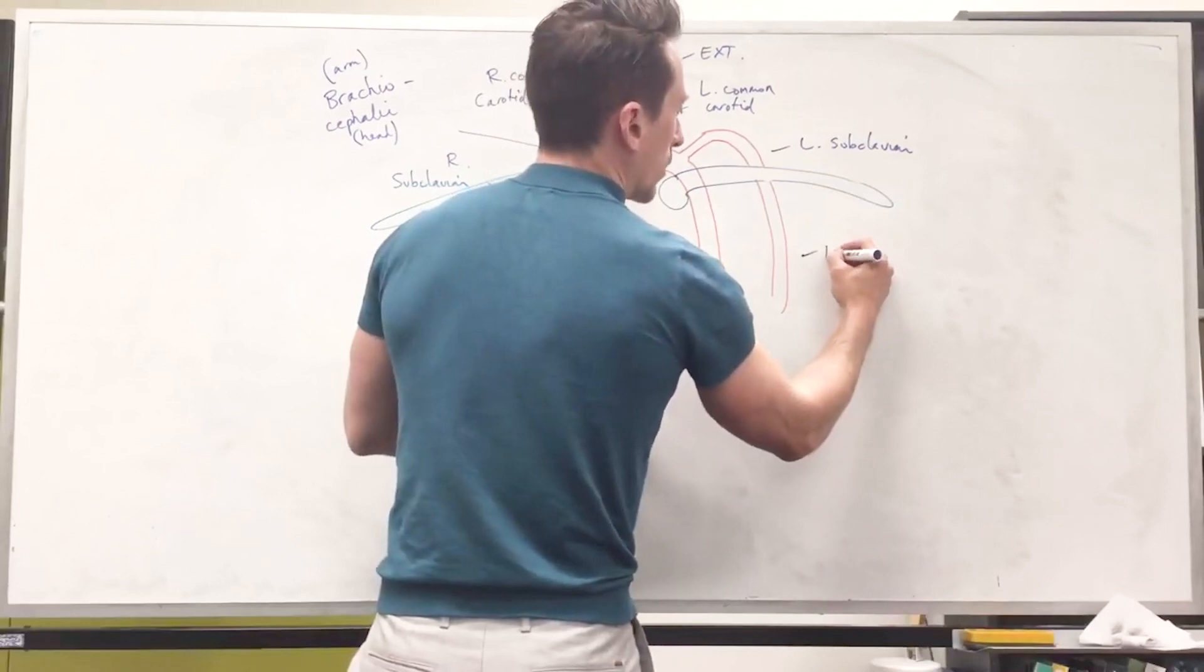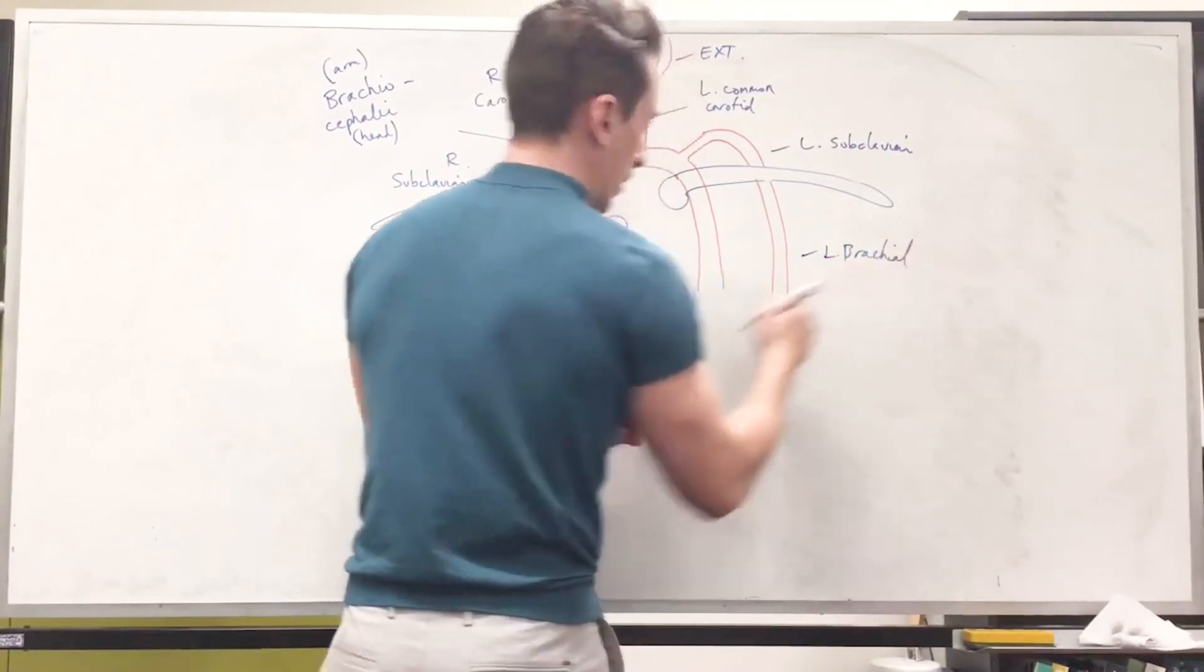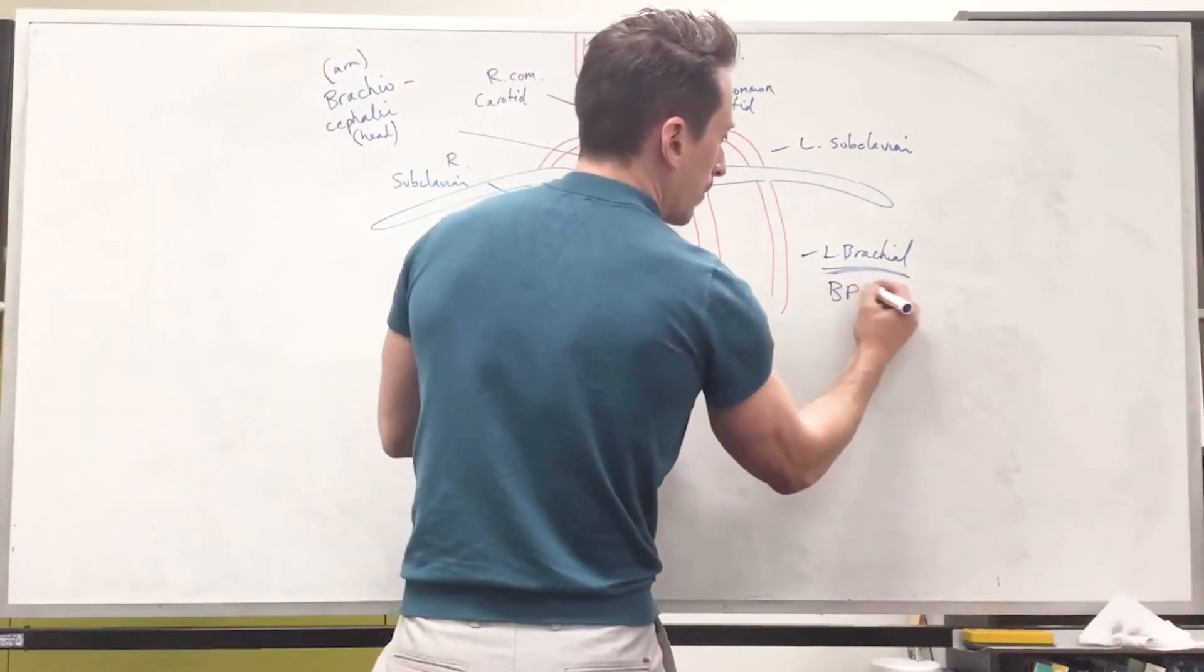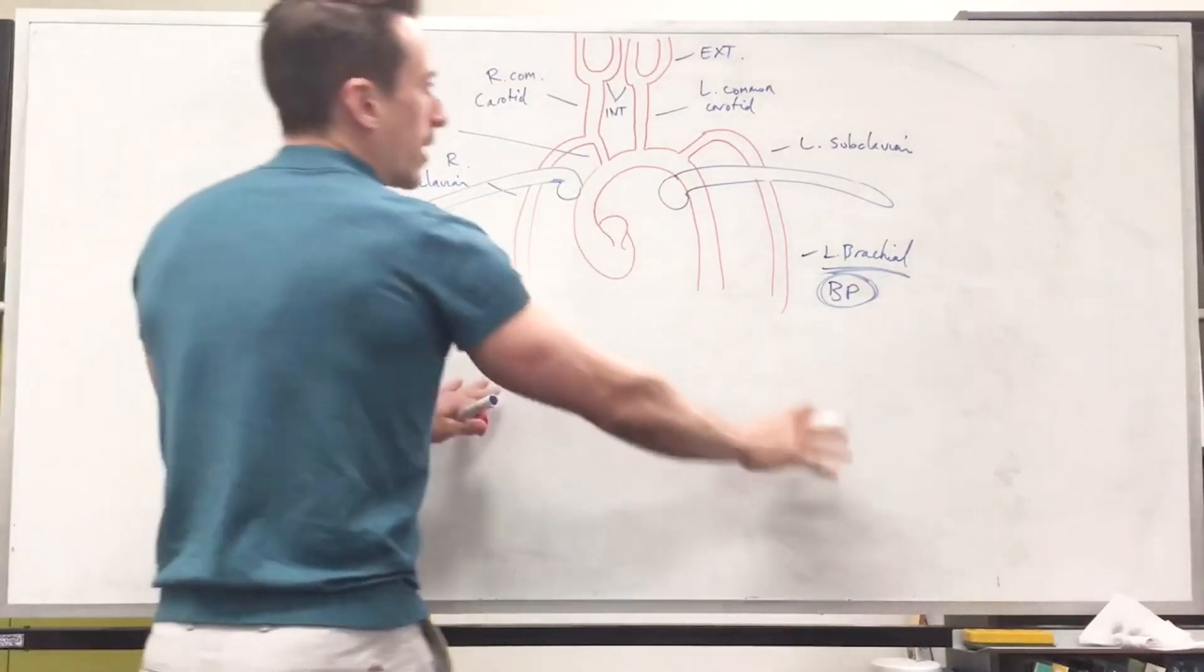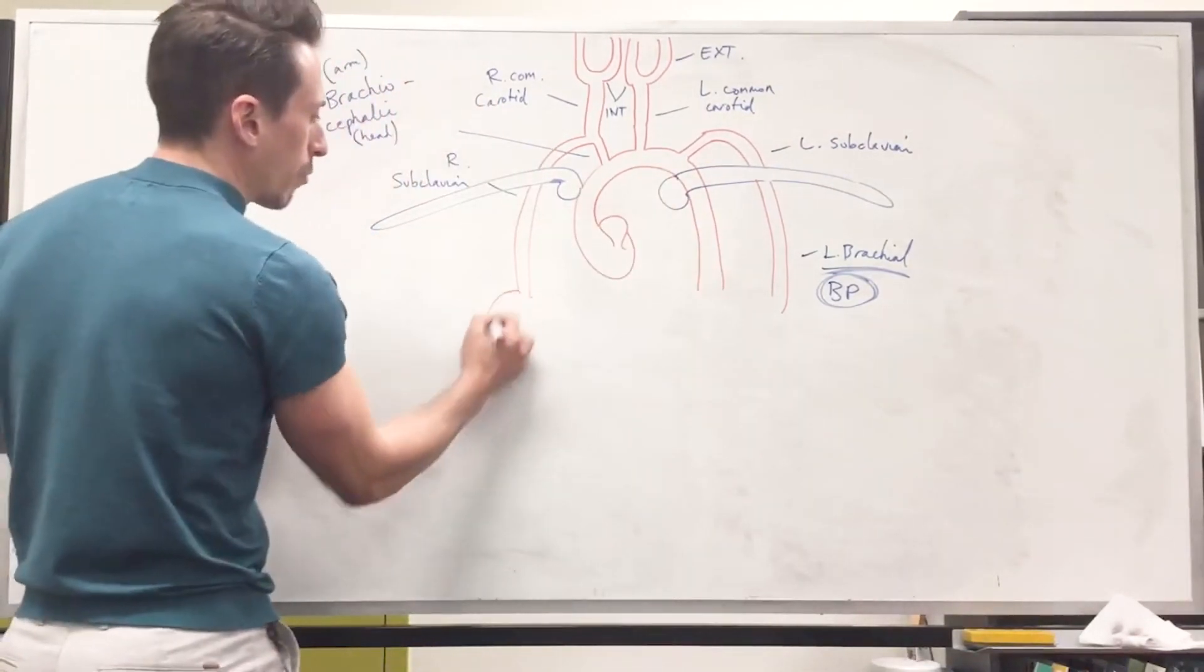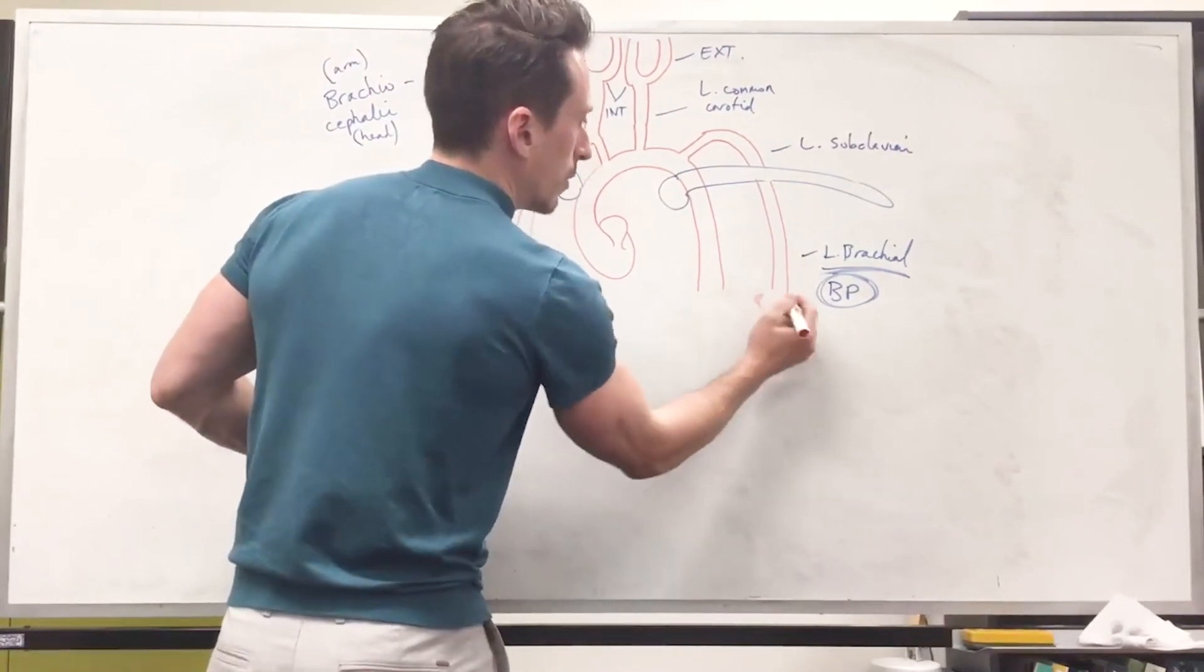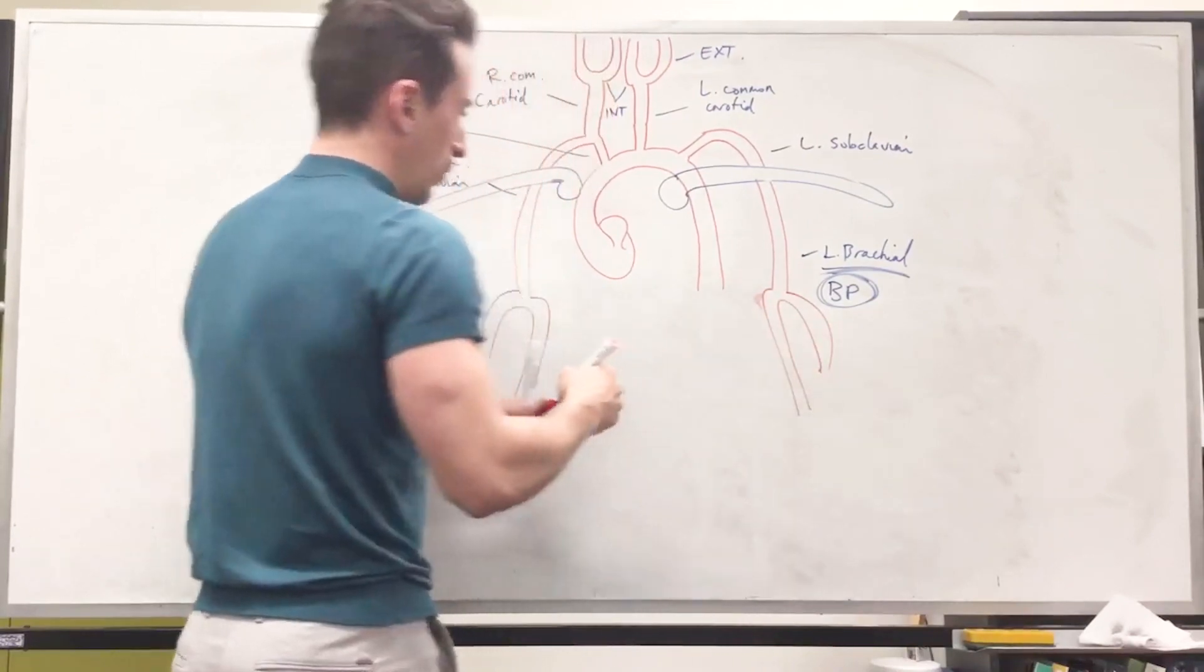So we're going to have the left and right brachial. I'll just write it up here, left brachial. And this is that blood vessel that we often do a manual blood pressure reading from. The brachial artery. Now, there's a couple more branches for the subclavian. I'll just very quickly say two that are clinically important. They're going to branch off.